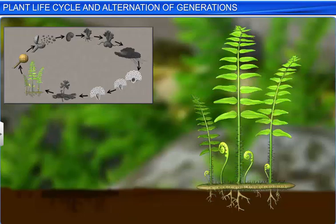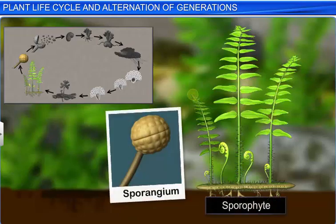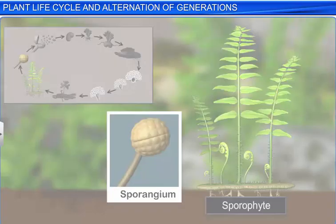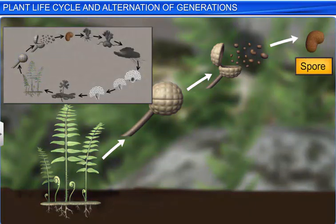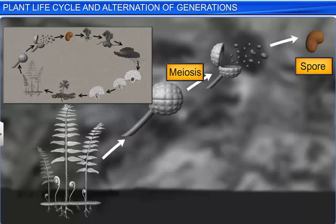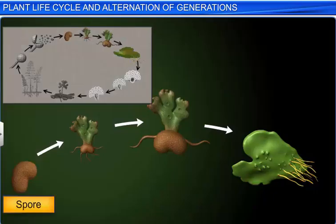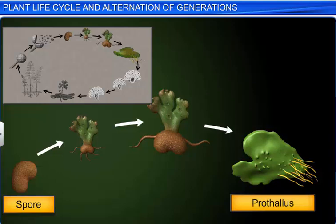In the life cycle of the fern, for instance, the main plant body — a mature sporophyte — bears sporangia, which produce haploid spores through meiosis. These spores undergo mitosis and germinate into a prothallus, a gametophyte, with haploid cells.